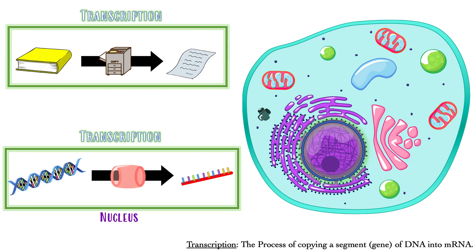Make sure you understand this concept: some genes are turned on and some are turned off — when they're needed they can be turned on, when they're not needed they're turned off. Now let's get into the nitty gritty details. First, we're going to start with transcription. Where does transcription happen? Very important: transcription happens inside your nucleus because that's where your DNA is — that's where the big yellow book is from the Bob the Builder story, all the code for all your proteins.